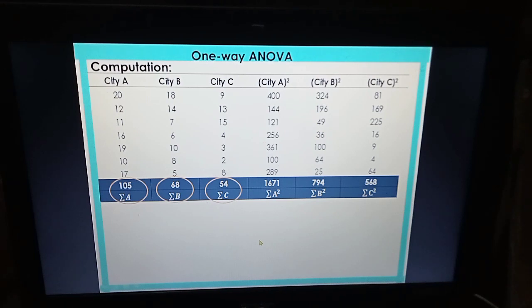First thing to do is get the sum. For the first group, add all the data. If you add them all, that is 105. City B got 68 as total. City C has 54 as total.